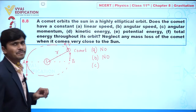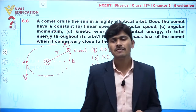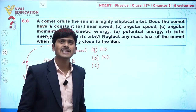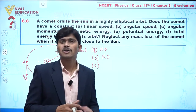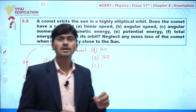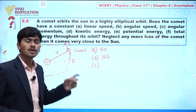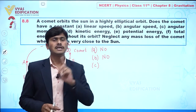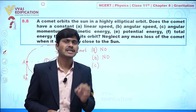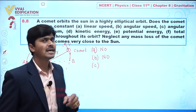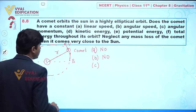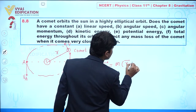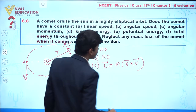Part (c): Angular momentum. Always keep in mind that whenever any planet or comet revolves around the sun, the total angular momentum always remains conserved. This is an important result: whenever a planet revolves around the sun in an elliptical orbit, angular momentum is the physical quantity that remains conserved.